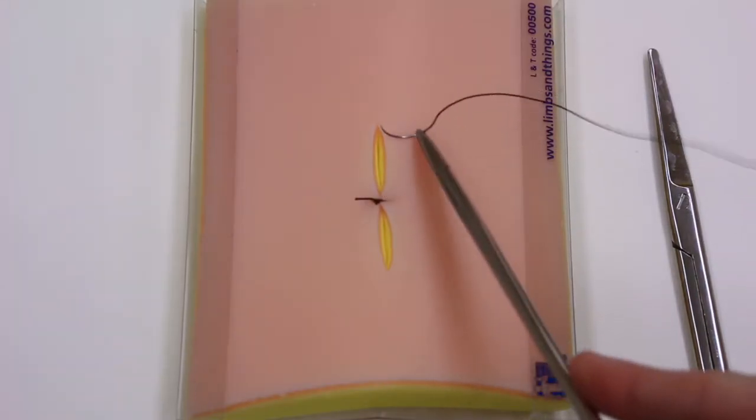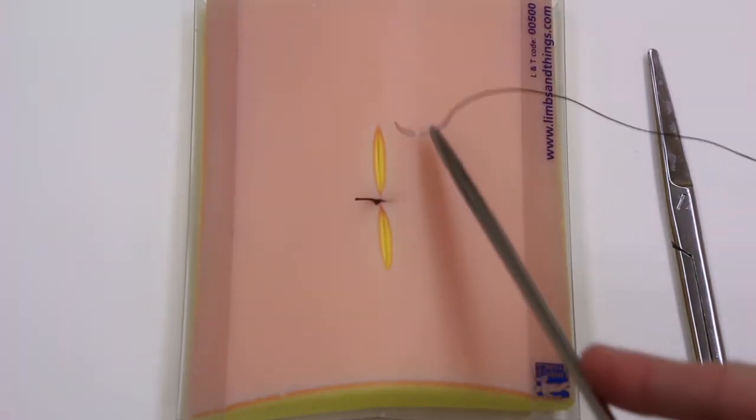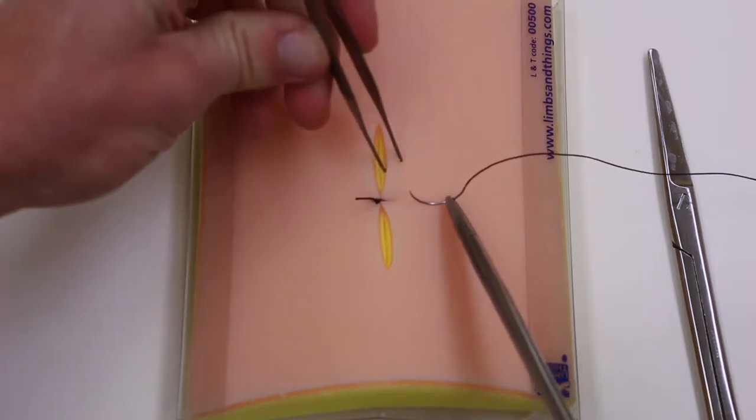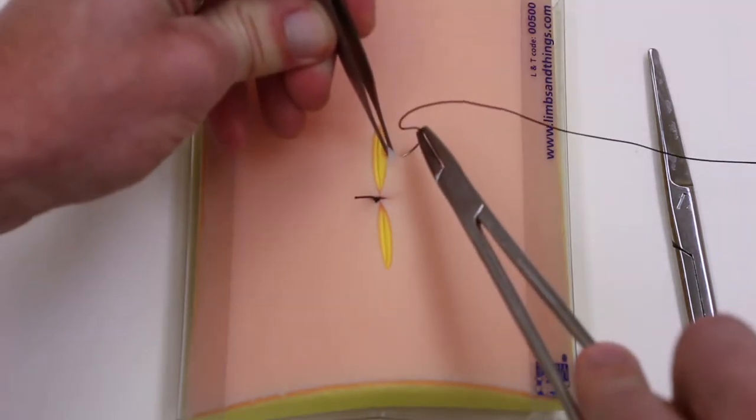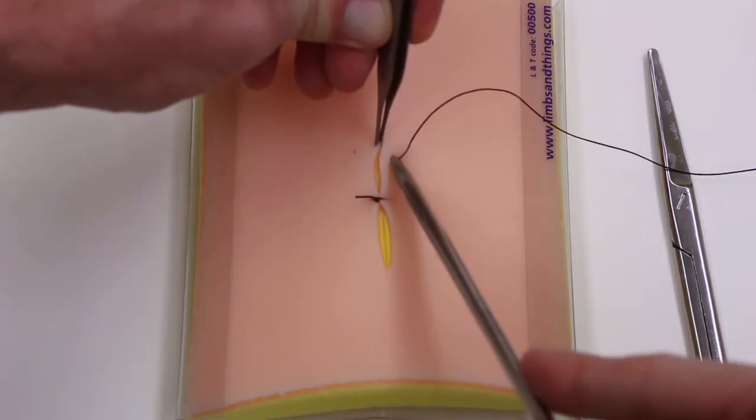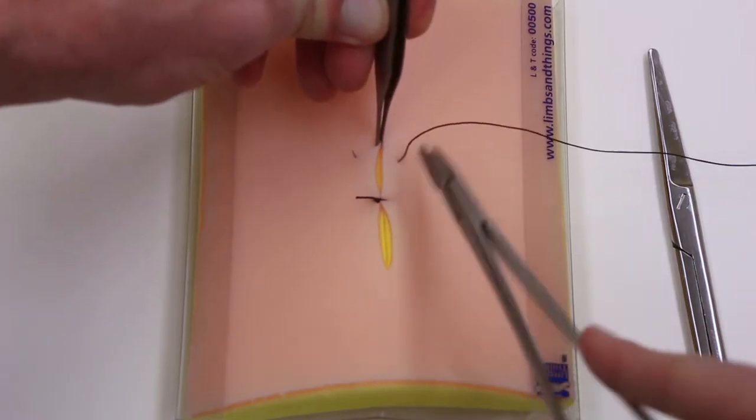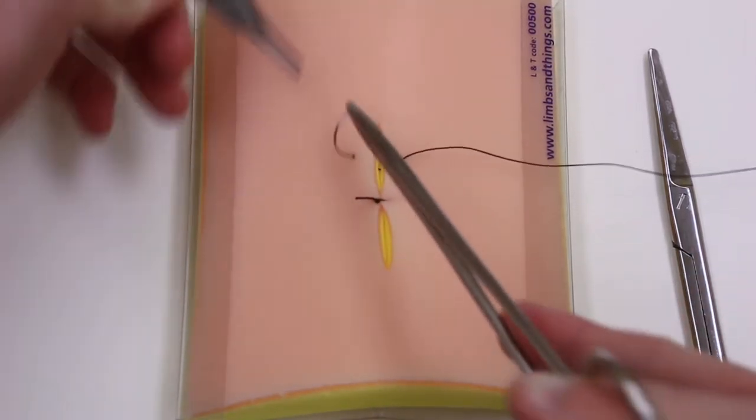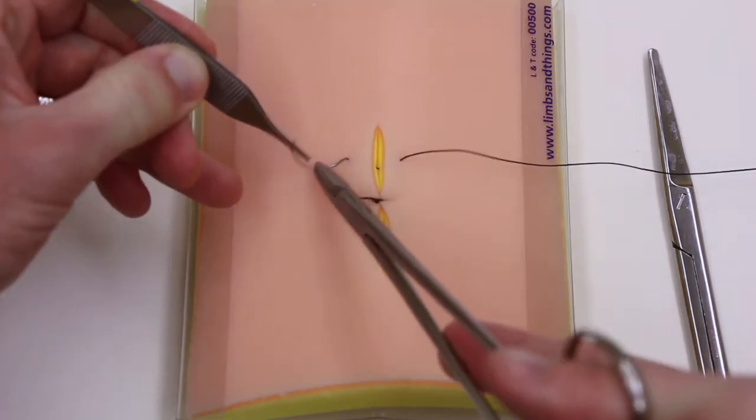Taking the remainder of the incision, splitting it in half. Needle in, rotating through, following the curve of that needle. You'll see once it's closer together, you can take it in a single bite.